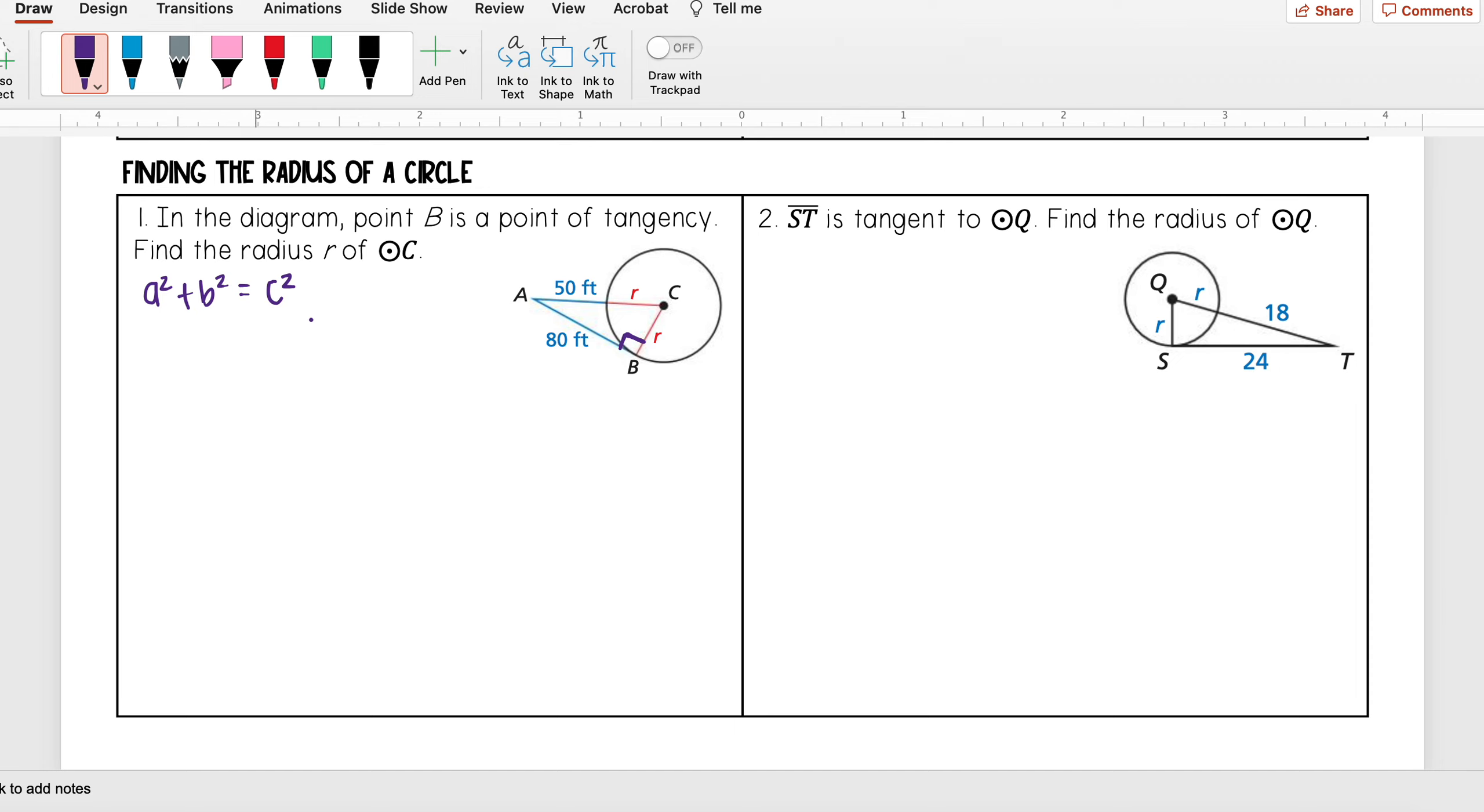I'm gonna plug in everything that I have into this equation. My a is R, b is 80. Now when I get to my c, I know my c is my hypotenuse, which is opposite my right angle. I have a 50 here and I have an R.